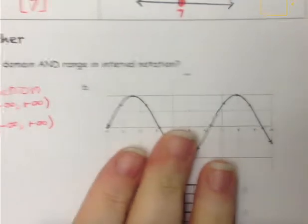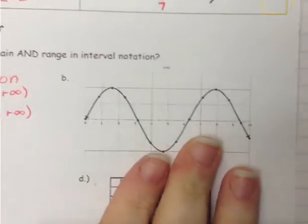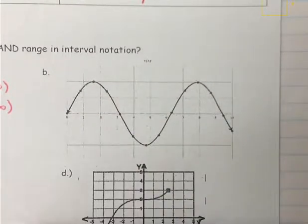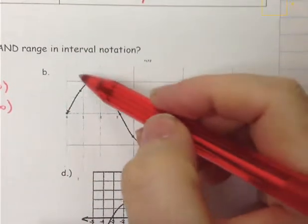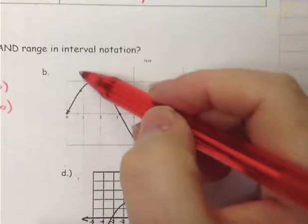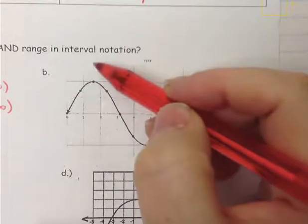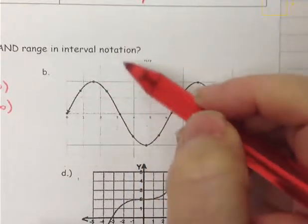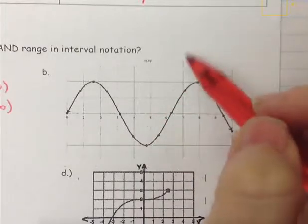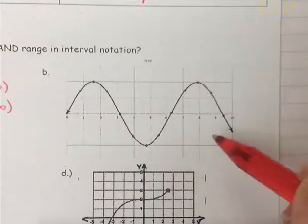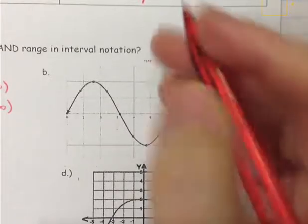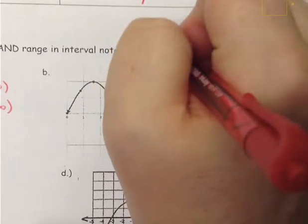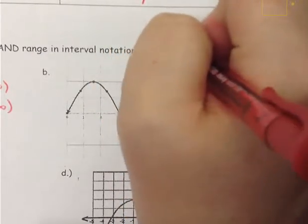Moving to the next example — I want to determine first, since it's a graph, if it's a function. Using the vertical line test: a vertical line will cross it once, anywhere I put a vertical line it will only cross it once. So this is a function because it passes the vertical line test.